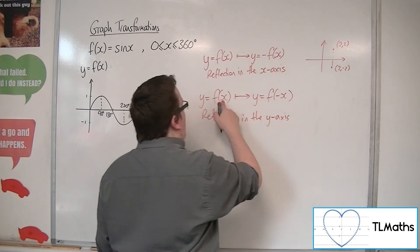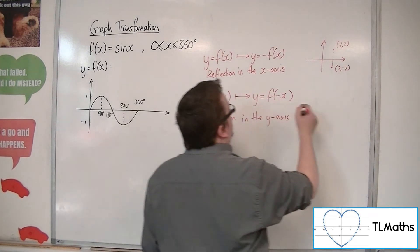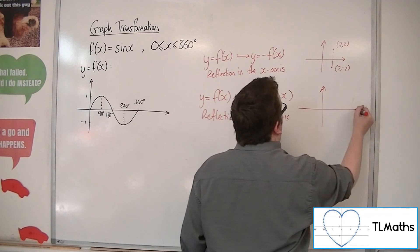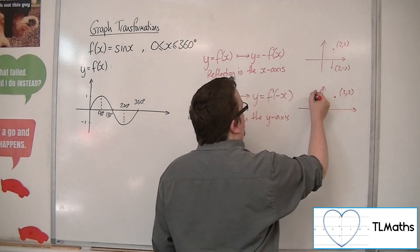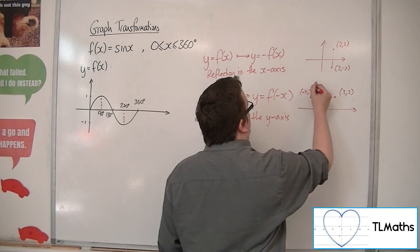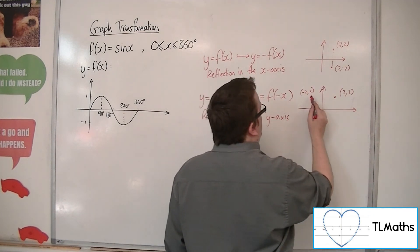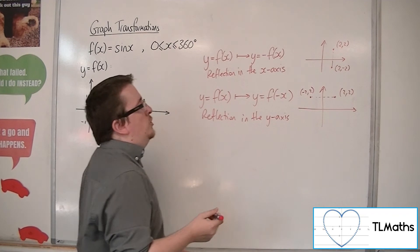So here the x is changing sign. So just choose a point. Let's go with 2, 2 again. The x-coordinate changes sign, so minus 2, 2. The y-coordinate will stay the same. And so that's a reflection in the y-axis.